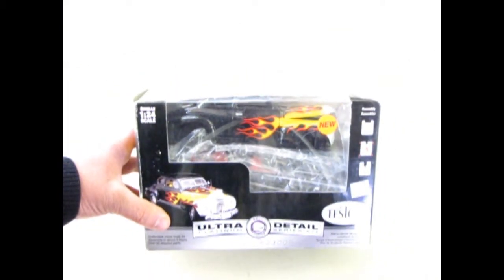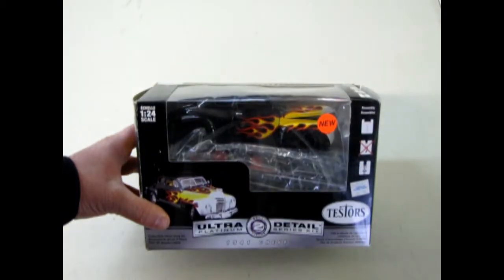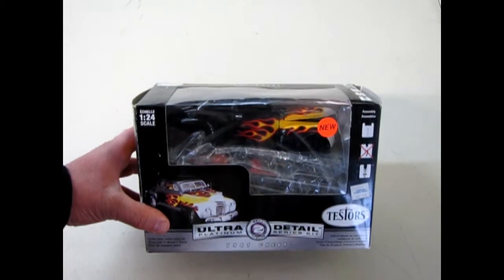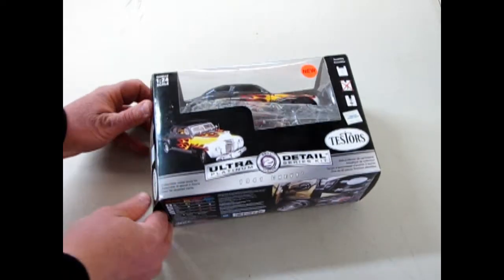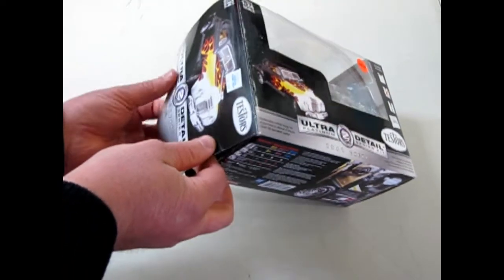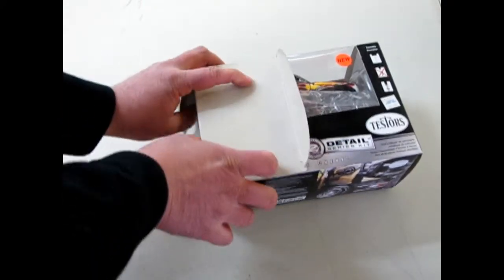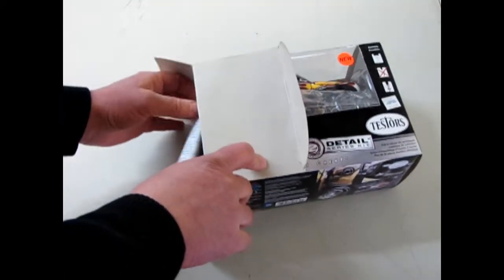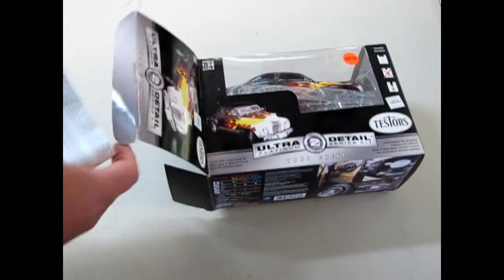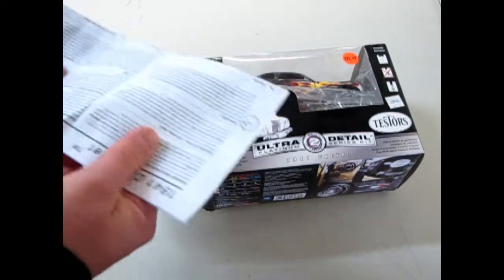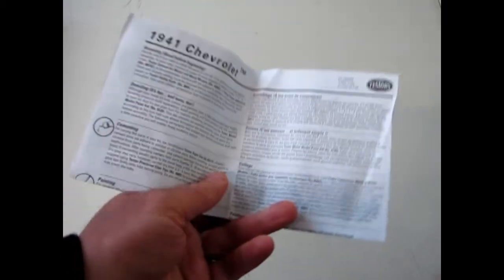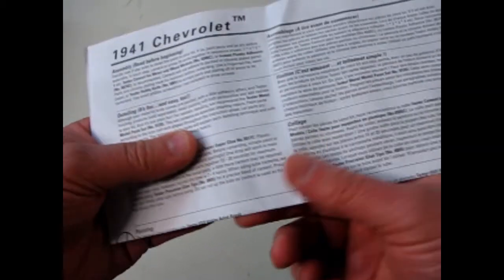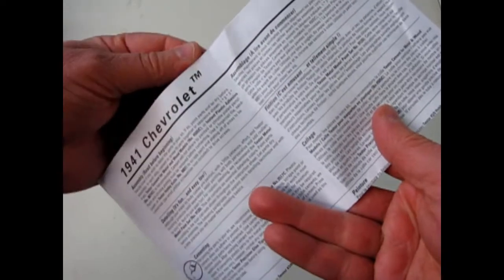Flames, flames, flames as we open up our 1941 Chevy kit by Testers. Now this is a die cast car that I picked up in 1:24 scale. Ooh, you can hear the big thump of the metal. Now let's move that there. The first thing we're going to start off with here are the instructions. You've got a pretty big bend in them.